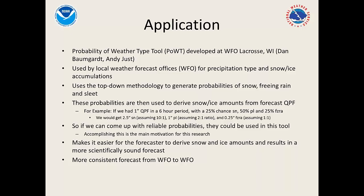As a quick example for those less familiar with the tool: if you had one inch of QPF in a six-hour period with probabilities of 25% snow, 50% sleet, and 25% freezing rain, and assuming typical snow-to-liquid ratios, your totals would come out to about 2.5 inches of snow, 1 inch of sleet, and a quarter inch of freezing rain. The tool runs this hourly so probabilities can change each hour. This is a simplified version, but it gives the general idea of what the tool does.